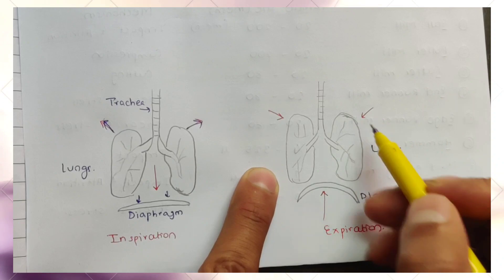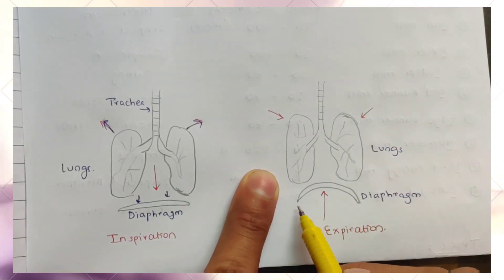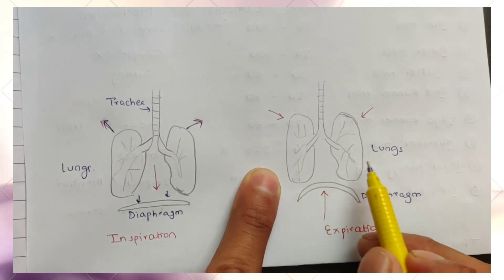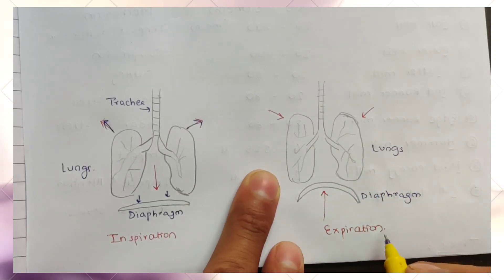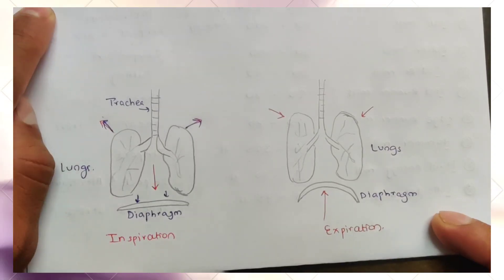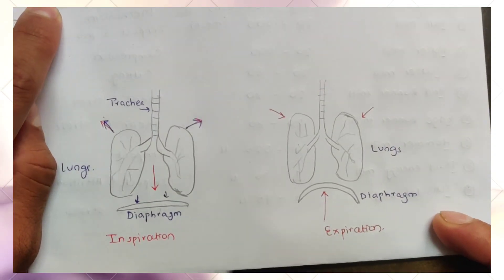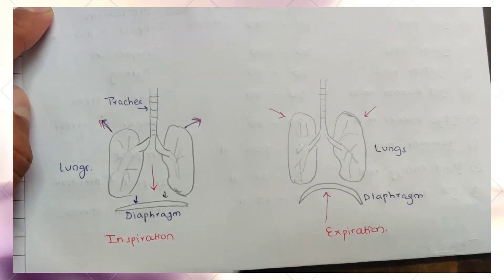When the diaphragm is dome-shaped and the air is expelled out, that is expiration. So that was the concept about pressure changes during pulmonary ventilation.